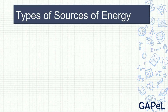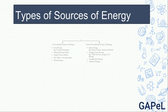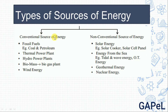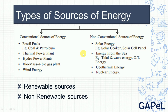Next is Types of Sources of Energy. There are different sources of energy, and they are divided into two types. First is the conventional source of energy and the second is the non-conventional source of energy. These are also known as renewable sources and non-renewable sources. Conventional sources are also called non-renewable sources. These sources will exhaust after a certain period of years — for example, coal and petroleum.